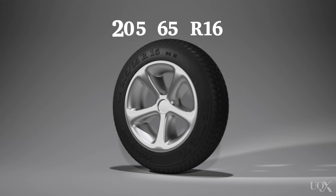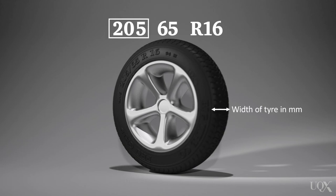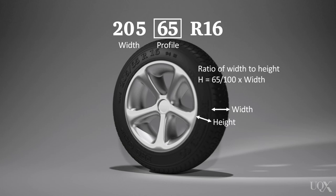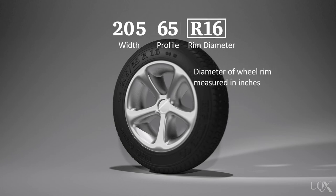So what do the numbers 20565R16 on this tire mean? The first number is the width of the tire in millimeters. The second number is the profile, which refers to the width to height ratio of a tire. The third number is the diameter of the wheel rim measured in inches.